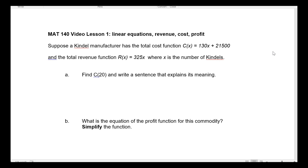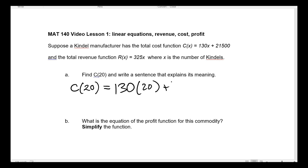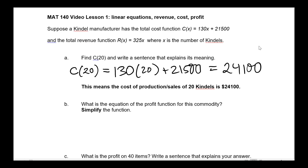The first question: find C(20) and write a sentence that explains its meaning. So we plug 20 into the cost function. C(20) = 130 times 20 plus 21,500, and typing that into your calculator, you get 24,100. It means the cost of the production and sales of 20 Kindles is $24,100.